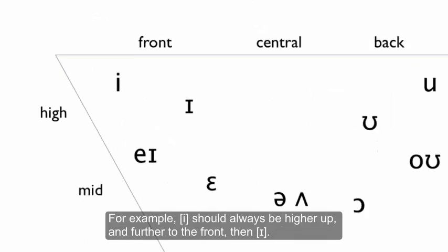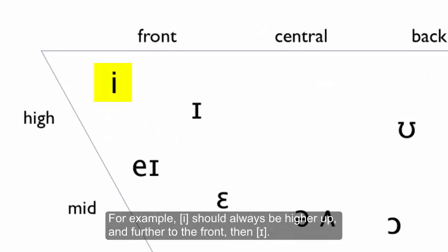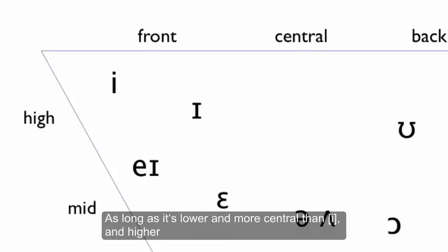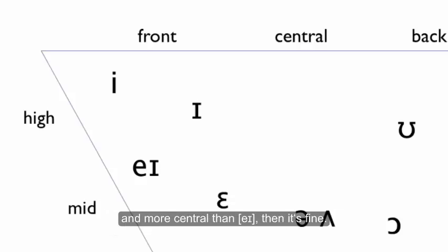For example, [ɪ] should always be higher up and further to the front than [i]. But if the [i] were a little bit moved away from this location, it'd be okay, as long as it's lower and more central than [ɛ] and higher and more central than [æ], then it's fine.